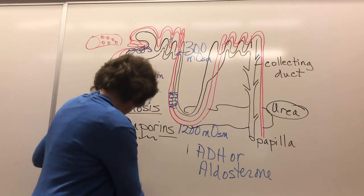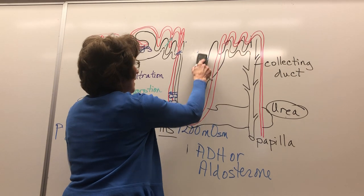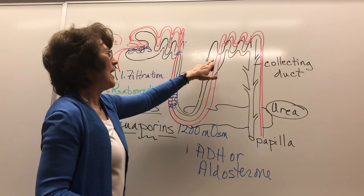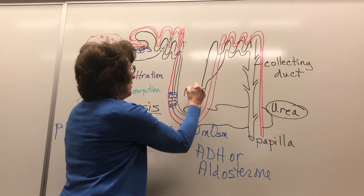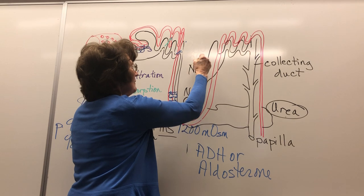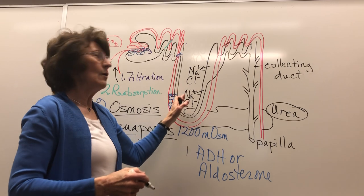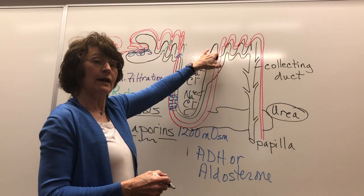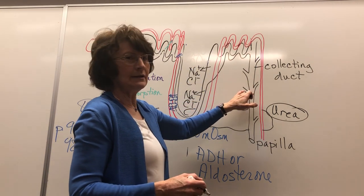Now follow what's happening as filtrate comes up the ascending limb. The ascending limb is thin and thick. In the thin portion, sodium and chloride are coming out. In the thick portion, they're being actively transported out. Since sodium and chloride are leaving, the filtrate becomes a lower milliosmol — in fact, it's 100 milliosmol. Then over on this side, we've got the collecting duct.